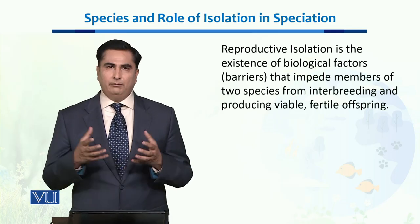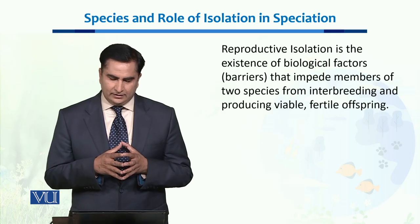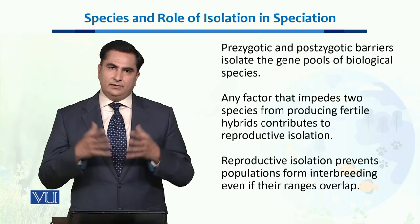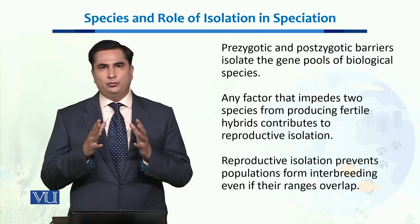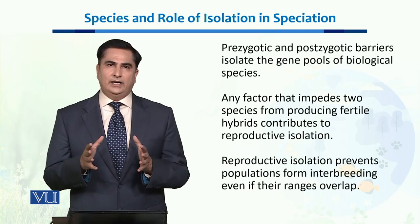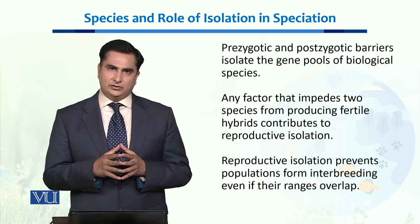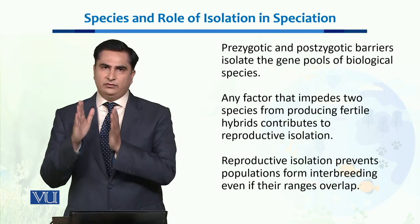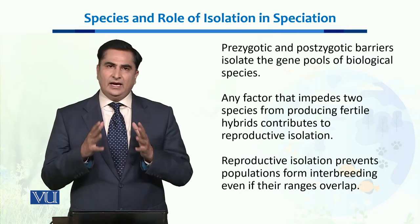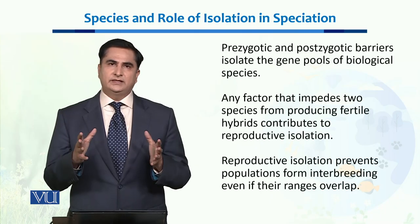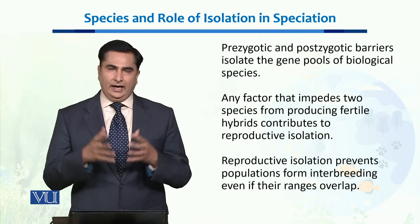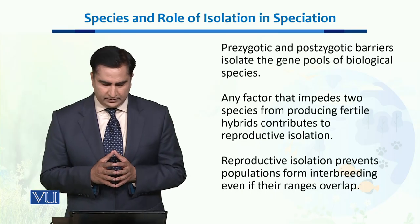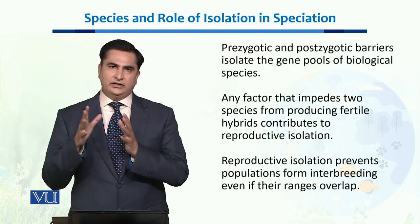Reproductive isolation is the existence of biological factors or barriers that impede members of two species from interbreeding with each other and producing viable fertile offspring. There are pre-zygotic as well as post-zygotic barriers which isolate the gene pool of biological species, keeping different species intact so they don't mix with other species.